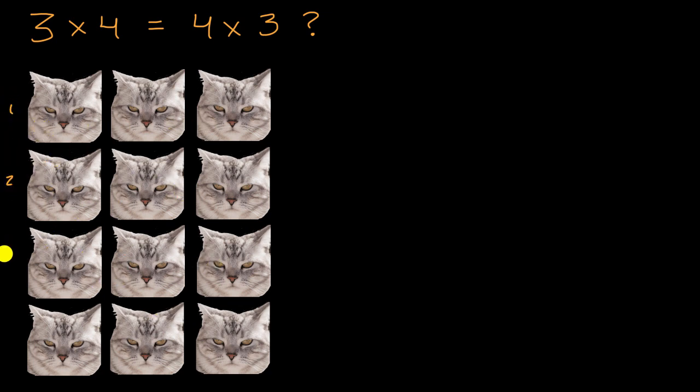You have one, two, three, four rows of one, two, three angry cats. And so to figure out how many total cats you have, you multiply four times three. But you could view this same group of angry cats, but just view it with a slightly different perspective.